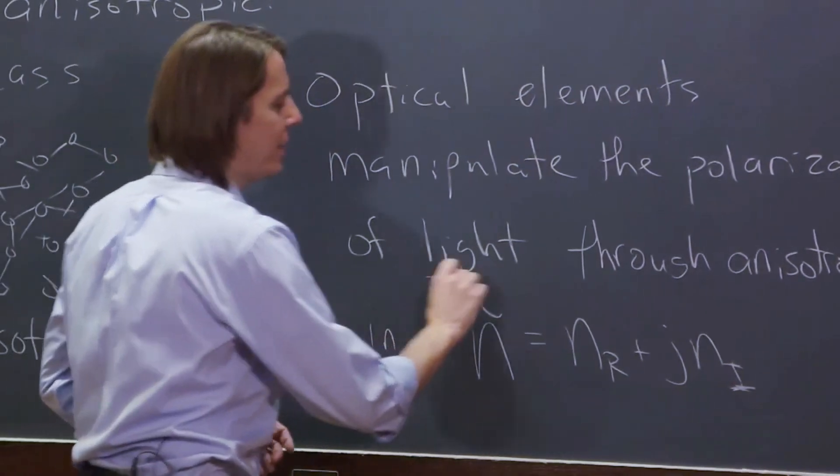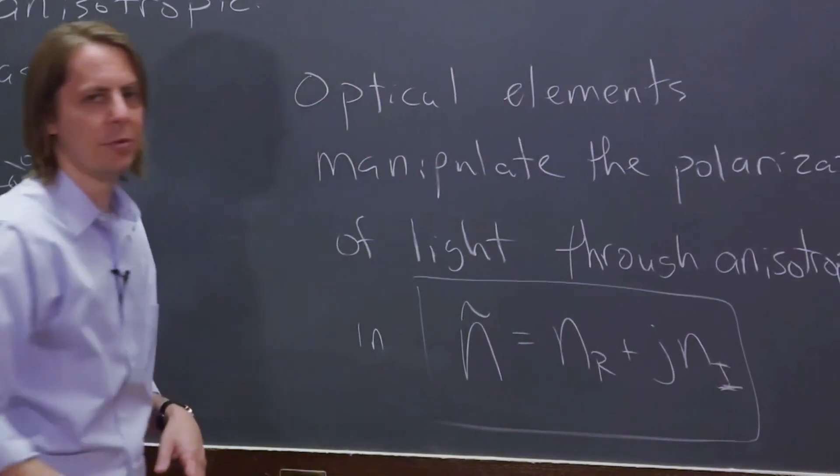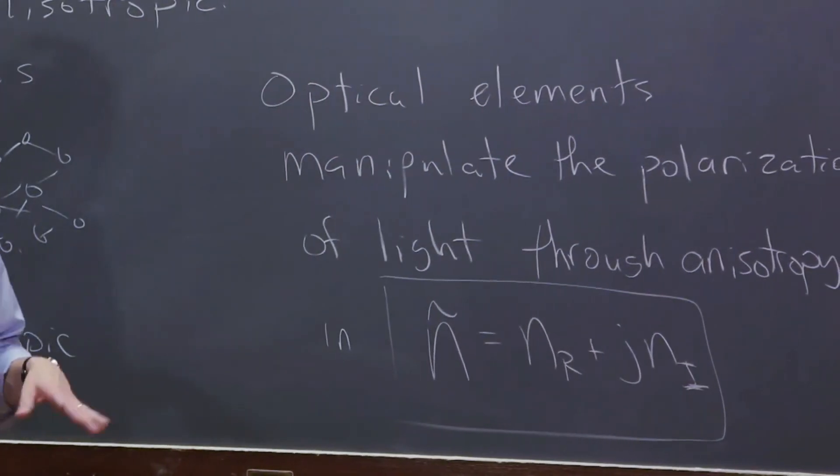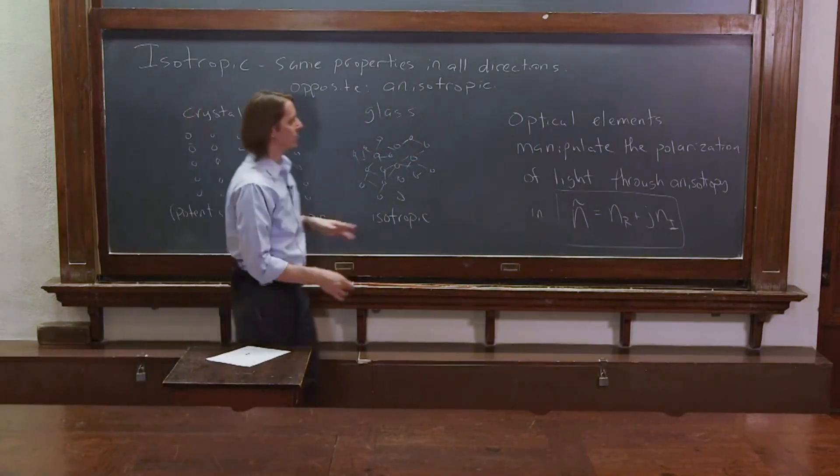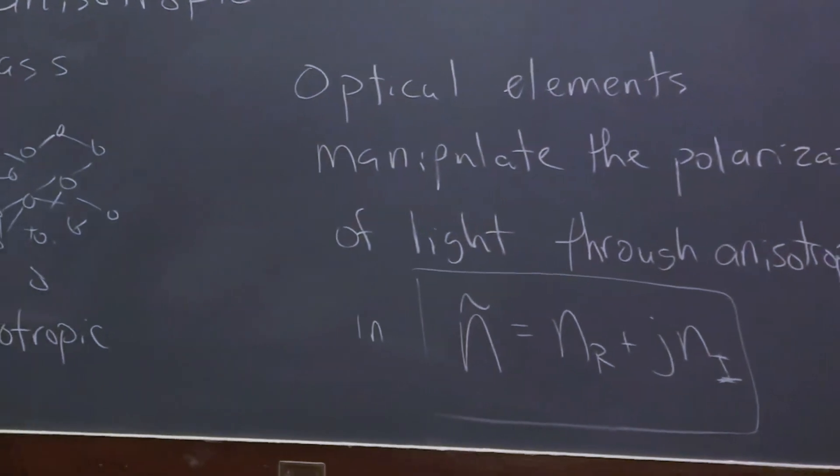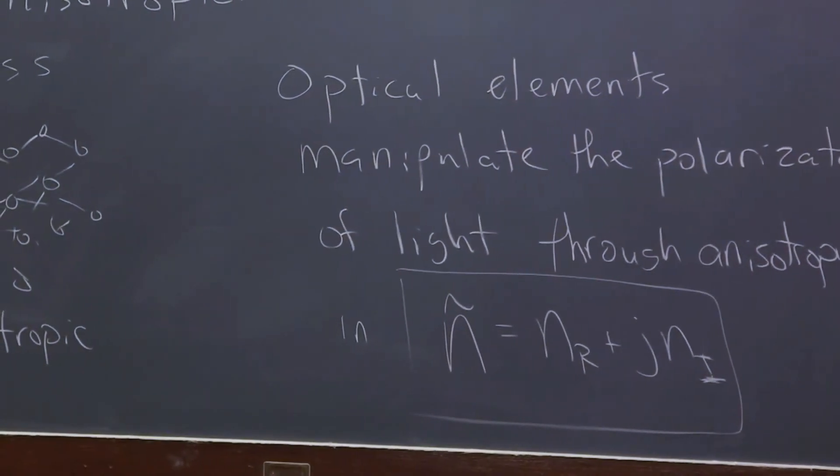So that number turns out to explain linear polarizers, phase retarders, rotators, all that stuff. So now we're going to start going through those one at a time, but keeping in mind this big picture. We're talking about anisotropy in the complex index of refraction.